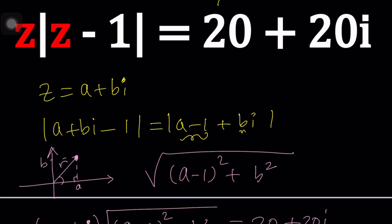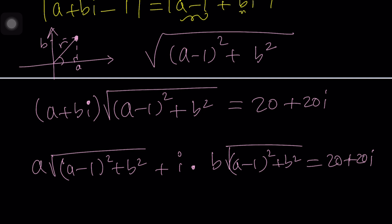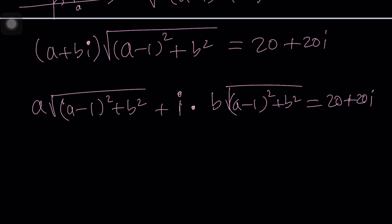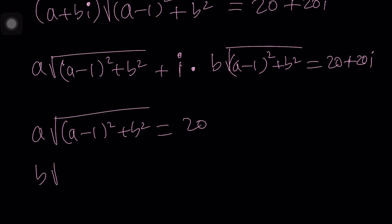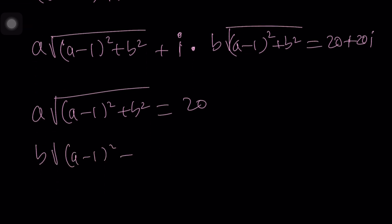Now what does this mean? This means that we can set up a system of equations. We can set the real parts equal to each other and the imaginary parts equal to each other. So we can write this as a times the square root of (a-1)² + b² equals 20 and then b times the same thing equals 20.